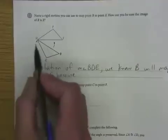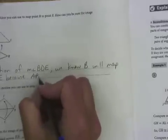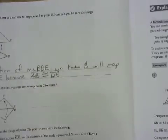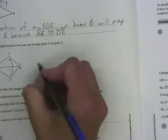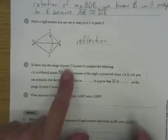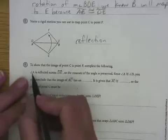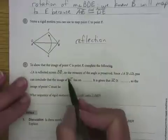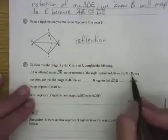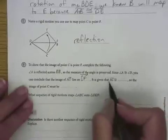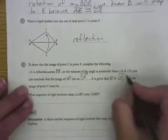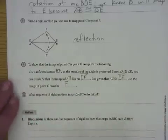Here's AB and here's DE. Finally, it's asking us to name a rigid motion to map point C to point F, and that would be a reflection. Since angle A is reflected across DE, the measure of the angle is preserved. Since angle A is congruent to angle D, the image of ray AC will lie on ray DF. And since segment AC is congruent to segment DF, the image of point C must be F.